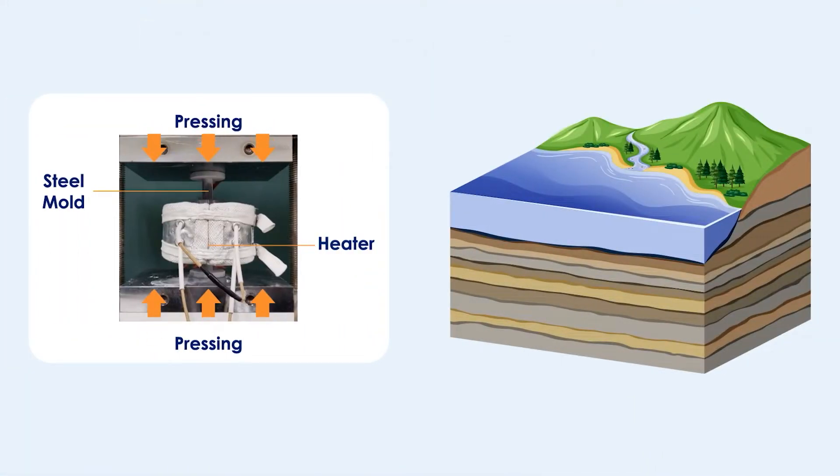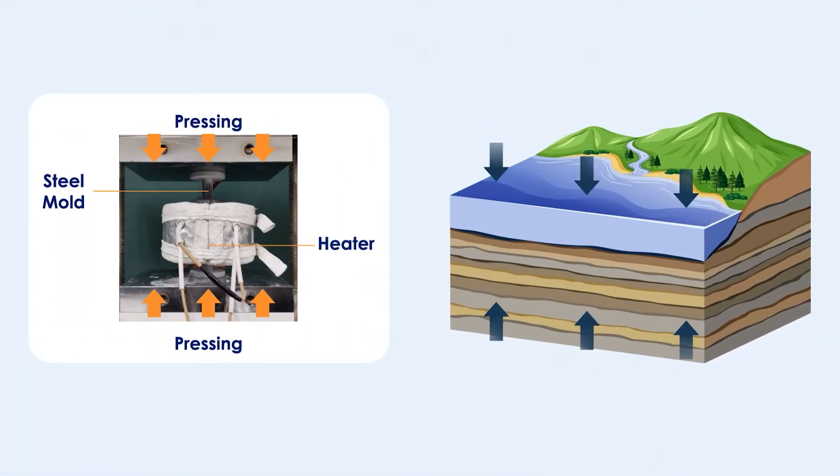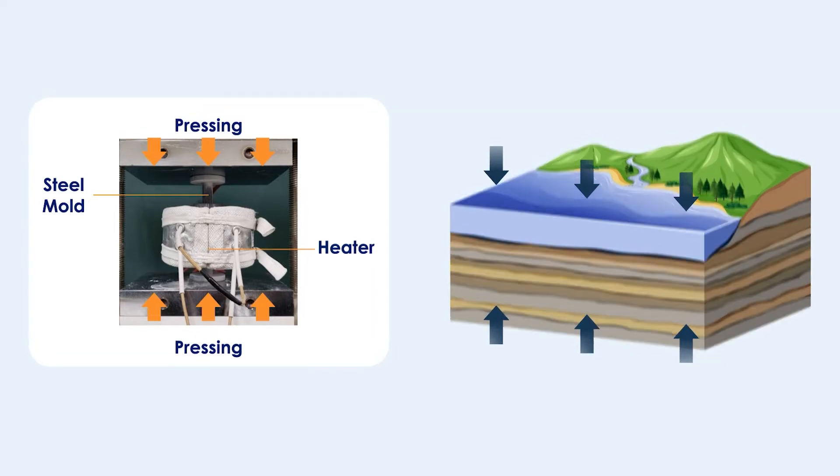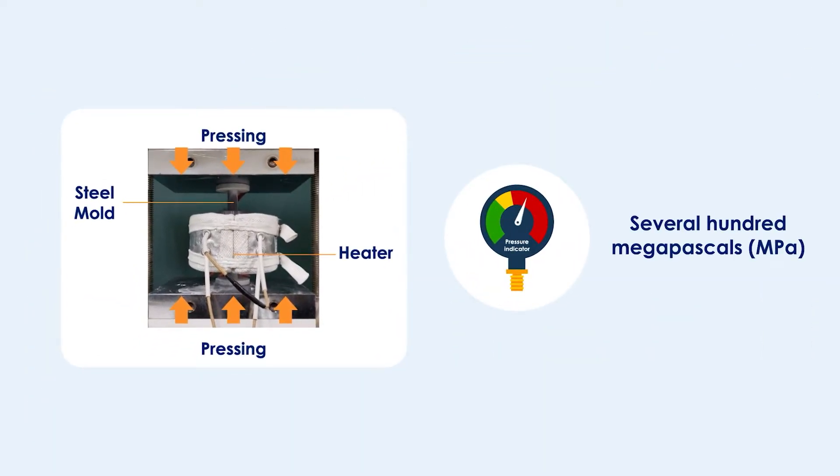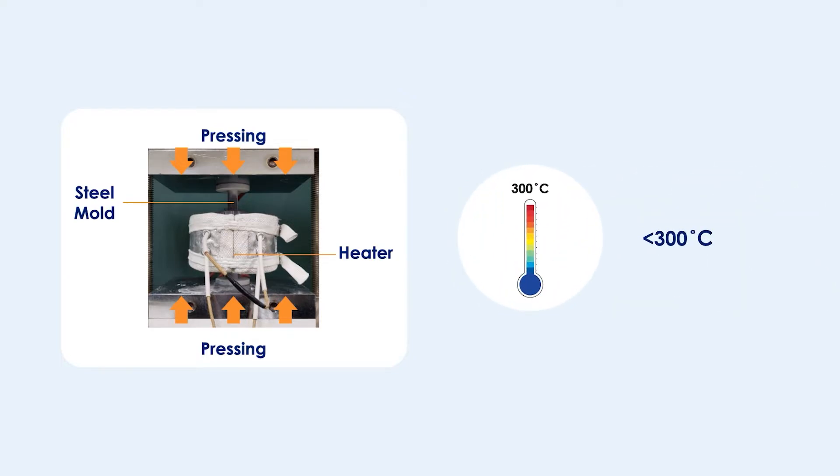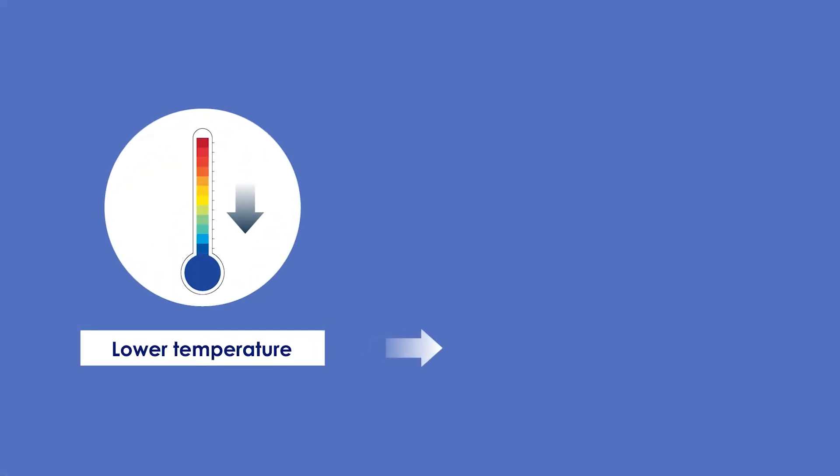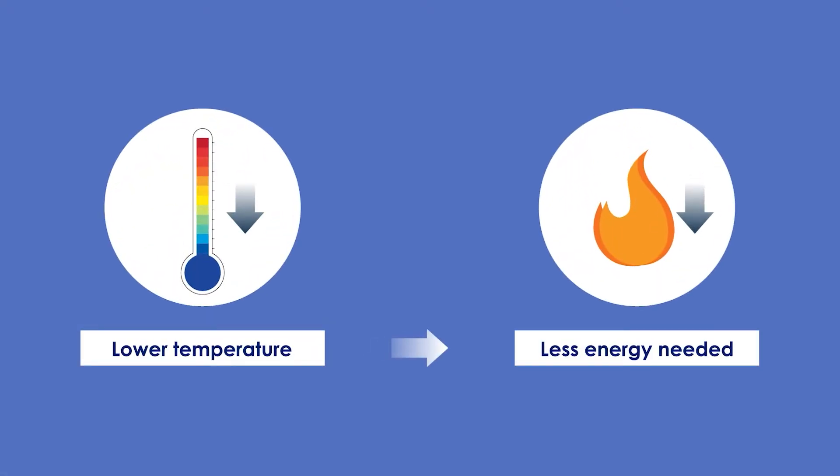The CSP mimics the natural process of sedimentary rock formation in the Earth's crust and can solidify powders under several hundred megapascals of pressure but requires lower temperatures such as 300 degrees Celsius or below. This makes it ideal for sintering MgCOH systems.